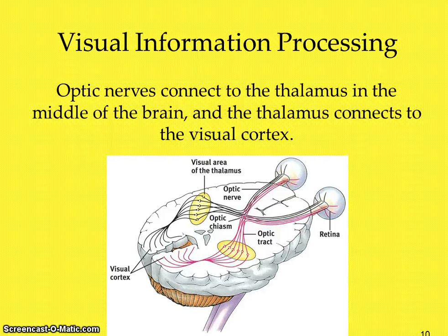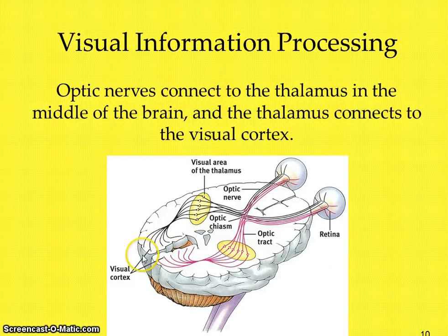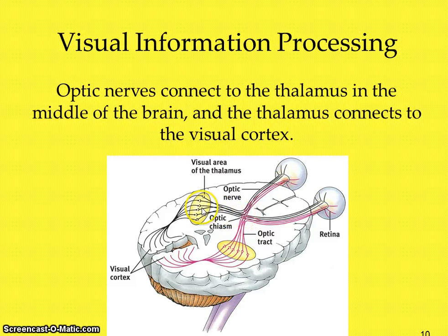Once the optic nerve carries the information from the retina, it is then processed through the thalamus. The thalamus is the sensory switchboard that sends the message from the optic nerve onward. The thalamus processes the information and sends it to our visual cortex, which is in the occipital lobe of our brain. If it falls in your right field of vision, it's going to cross the optic chiasm into the optic nerve, pass through the thalamus, and be sent to the left visual cortex of the occipital lobe. So that's how the eye works.